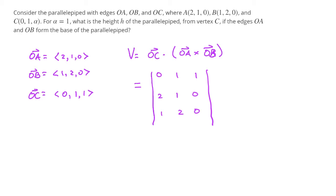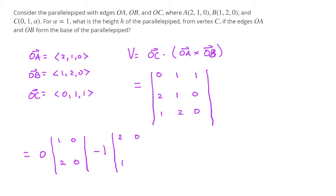Expanding the determinant along the first row: the first entry is 0 times the 2x2 determinant of rows [1, 0] and [2, 0]. Then minus 1 times the 2x2 determinant of [2, 0] and [1, 0]. Finally, plus 1 times the 2x2 determinant of [2, 1] and [1, 2].